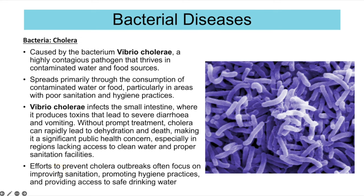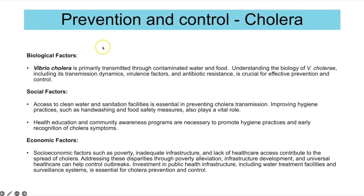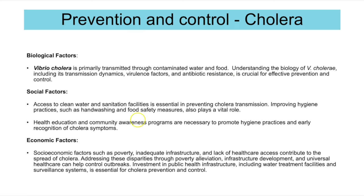Efforts to prevent cholera outbreaks focus on improving sanitation, promoting hygiene practices and providing access to safe drinking water. Biologically, knowing it's transmitted through contaminated food and water means you must drink thoroughly cleaned water and ensure food is well cooked — and it can be treated with antibiotics. Social factors include improving access to clean water, handwashing, and community education. Economically, reducing poverty and improving infrastructure also helps reduce the spread.